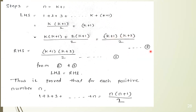Now we solve the RHS. The RHS is n(n+1)/2, and n is now k plus 1. So it becomes (k+1)(k+1+1)/2, which equals (k+1)(k+2)/2. This is equation 3. From equations 2 and 3, we can prove that LHS equals RHS. Thus, we can say that the given series 1 plus 2 plus 3 plus dot dot dot plus n equals n(n+1)/2 is true for each and every positive number.